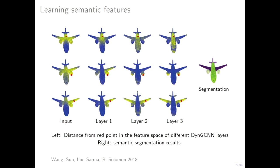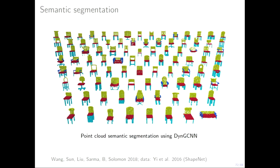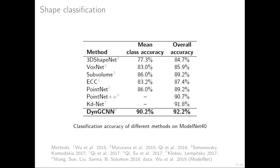Here you can see the problem of point cloud segmentation — segmenting different parts of an airplane. What I'm visualizing is the distance from the red point. Initially the distance is Euclidean, but as we go deeper into the network it becomes more semantic — for example, the nearest parts become the two engines of the plane. This is because we allow updating the graph between layers. Some examples of segmentation of chairs showed state-of-the-art results in the computer graphics community, outperforming point-cloud-based models like PointNet which doesn't account for any local structure. Here we capture local structure through this dynamic graph.